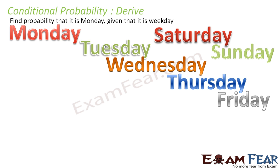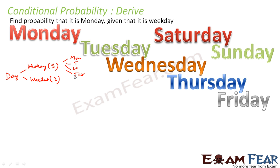We did this question: find the probability that it is a Monday given it is a weekday. We had the days of the week — there are two weekend days and five weekdays: Monday, Tuesday, Wednesday, Thursday, and Friday. All these are equally likely, so the probability of getting Monday given it is a weekday was one by five.